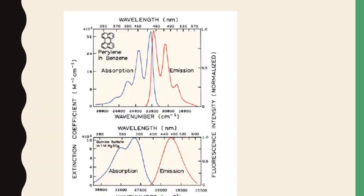Two examples are shown here. In the first example, a benzene structure molecule is shown. On the lower x-axis we have wavenumber and on the upper x-axis we have wavelength. On the left-hand y-axis is the extinction coefficient and on the right-hand y-axis is fluorescence intensity. There are three absorption peaks, and correspondingly there are three emission peaks — one, two, and three. This is why I call it a mirror image: whatever is absorbed at different levels will also be emitted at different levels.